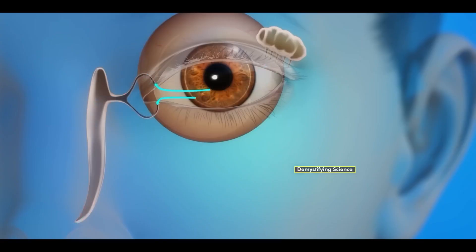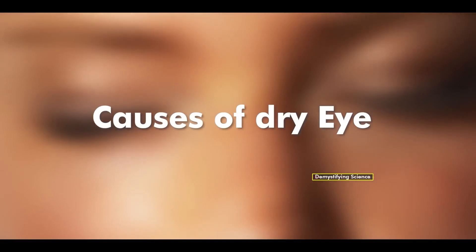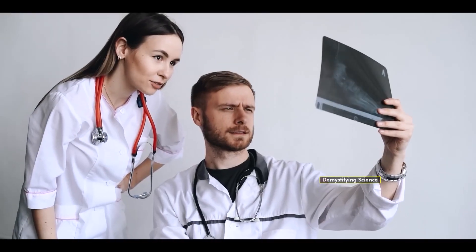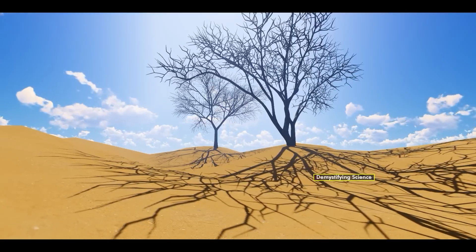When tear glands fail to produce enough tears, the eyes become dry. Several reasons can lead to dry eyes, such as autoimmune diseases, eyelid infections, aging and dry environmental conditions.